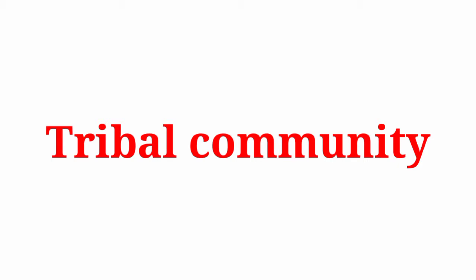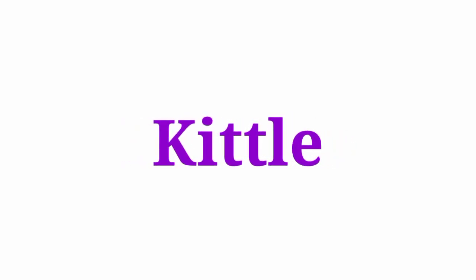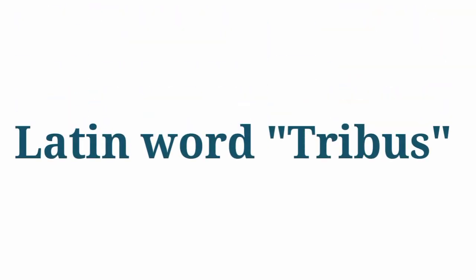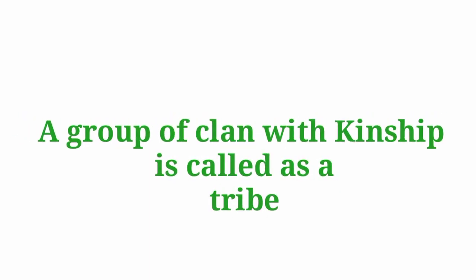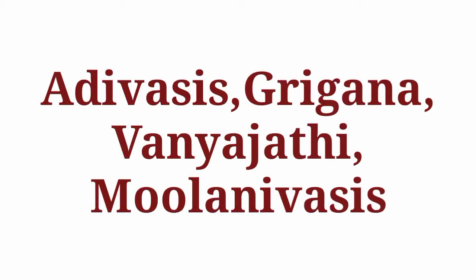Now let us move on to the tribal community. Biological and sociological scientists use the term 'tribe' in different meanings. In his Canada Dictionary, he defined the term tribe as a family or clan. It originated from the Latin word 'tribes', and Greek and Roman writers used this term for the first time to indicate the tribes of Latinium districts. A group of clans with kinship is called a tribe. In Canada it is called 'Buddha', and tribal people are also called Adivasis, Girijanas, Vinaya Jatis, and Molanis.